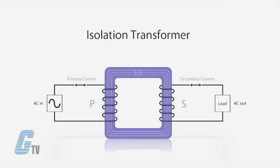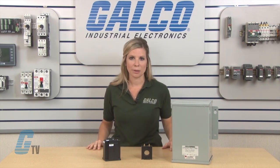An isolation transformer is a very unique transformer. It has a 1 to 1 turns ratio. Therefore, it does not step voltage up or down. Instead, it serves as a safety device. It is used to isolate the grounded conductor of a power line from the chassis or any portion of a circuit load. These transformers' primary purpose is to isolate circuits.